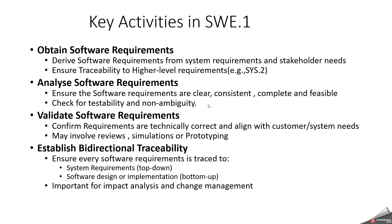What are the key activities in SWE1? First of all, we have to analyze the system requirements, because SWE1 begins by reviewing the system or customer requirements to identify those relevant to software. Then we have to specify the software requirements — the process translates system-level requirements into detailed software requirements, distinguishing between functional and non-functional. Functional means what the software must do, and non-functional means performance and reliability aspects. Then we structure the requirements by clustering related items to improve clarity and manageability. We also have to ensure bi-directional traceability — each software requirement must be traceable back to its originating system requirement and forward to design, implementation, and test artifacts.